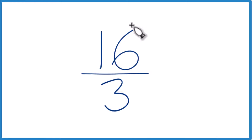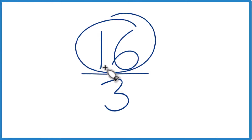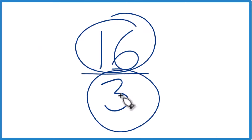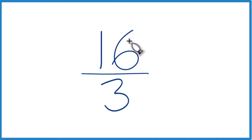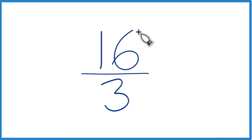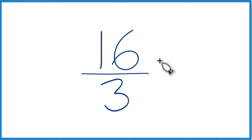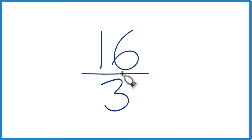Here's how you can write the fraction 16 thirds as a mixed number. Right now it's an improper fraction because the numerator is larger than the denominator. We can't really simplify 16 thirds any further, because the only number that goes into both 16 and 3 is 1. So our common factor is just 1 — it's already simplified.